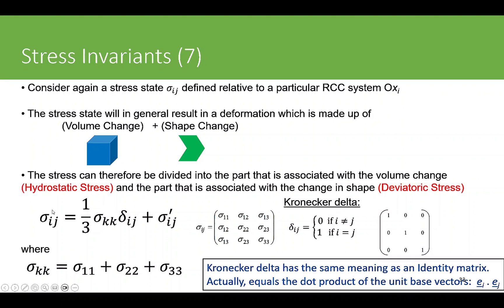The stress tensor sigma_ij has nine components. The term delta_ij is the identity tensor — also called the Kronecker delta in continuum mechanics — defined such that delta_ij = 1 when i equals j, and delta_ij = 0 when i does not equal j. For example, delta_11 = 1 and delta_12 = 0. This is essentially the definition of the identity matrix expressed in tensor notation.